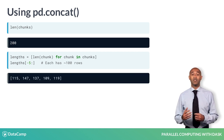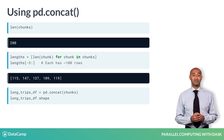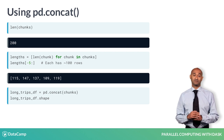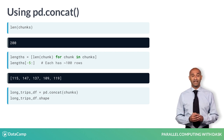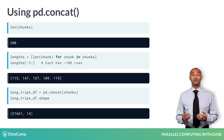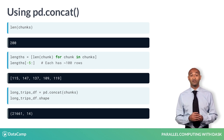The pandas function concat accepts this list of dataframes with common column labels and stacks them vertically. The resulting dataframe LongTripsDF has almost 22,000 rows, much fewer than the original 200,000.